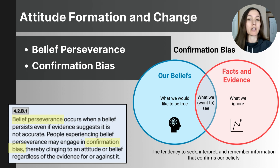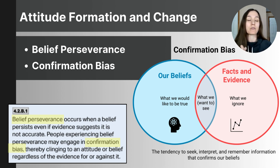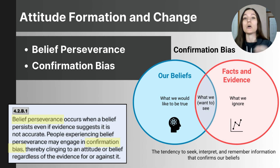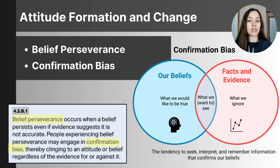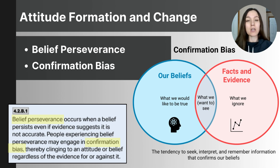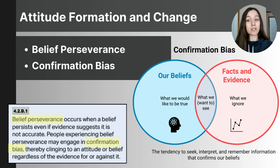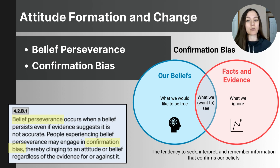In a 1979 study by Lord, Ross, and Lepper, researchers examined how people hold on to their beliefs even when given evidence that disagrees with them. They had 192 participants who either strongly supported or strongly opposed capital punishment. Participants read two research studies — one saying capital punishment reduces crime and one saying it has no effect. The results showed participants didn't change their beliefs. Instead, they used biased reasoning: finding flaws in research that disagreed with their views and rating research supporting their beliefs as more trustworthy.